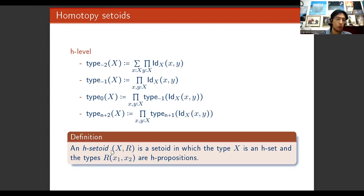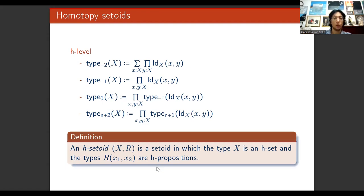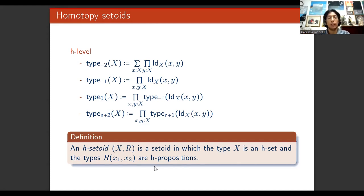The homotopical intuition behind these two levels is the following: an H-proposition is a type which is either empty or contractible. An H-set, instead, is a type which is discrete, meaning that all the higher structure is trivial. We defined an H-setoid as a setoid in which the base type X is an H-set and the dependent type R is an H-proposition. This is a natural choice because what we can do with these two homotopy levels is actually what we can do with all set-based mathematics.